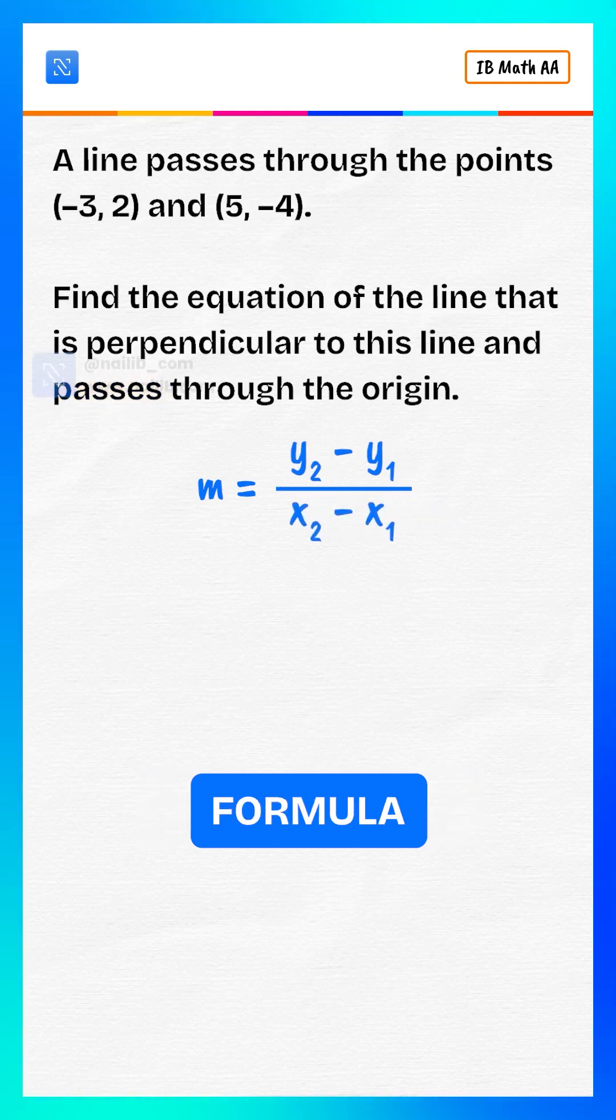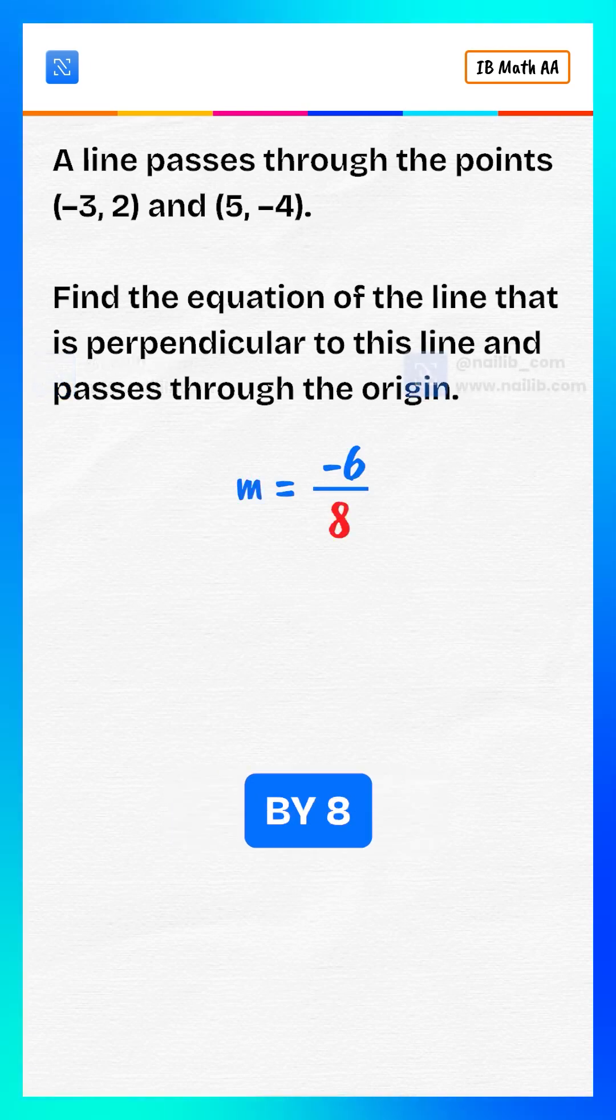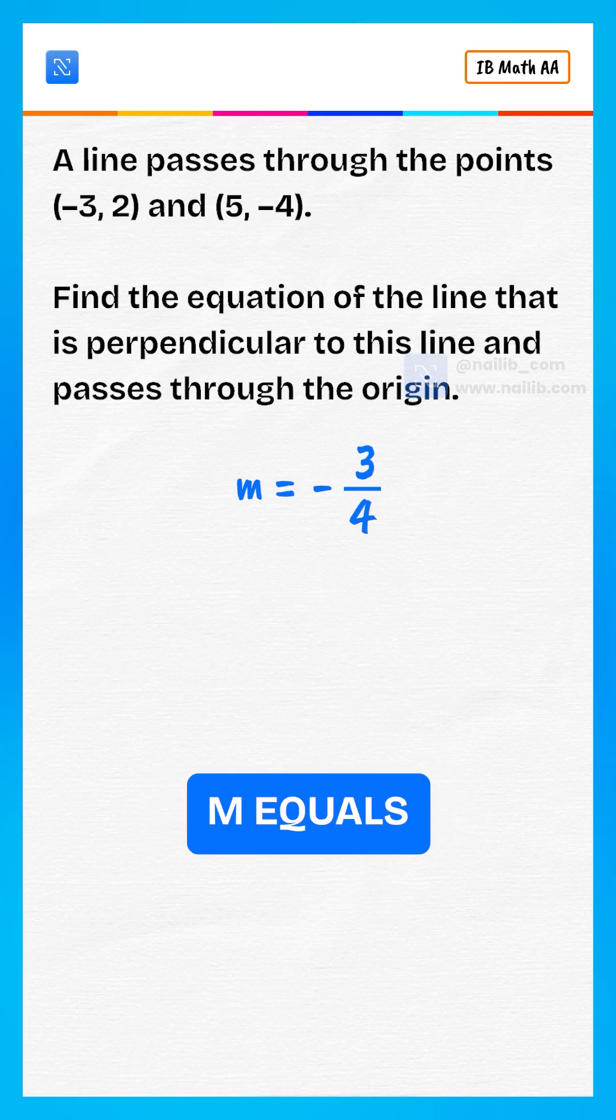Use the slope formula. Substitute the points. That gives m equals negative 6 divided by 8, which simplifies to m equals negative 3 divided by 4.